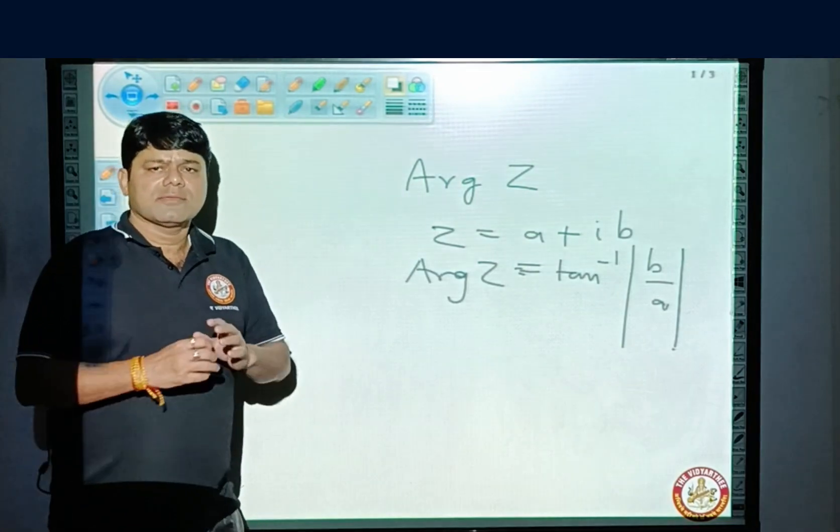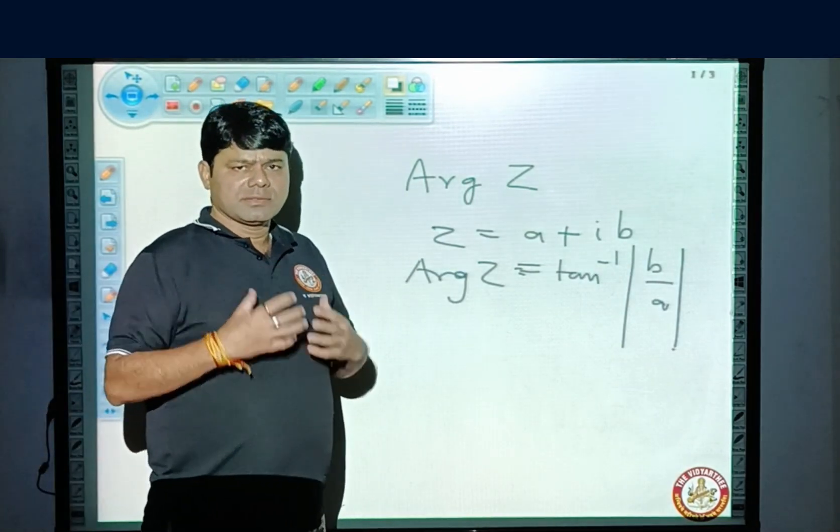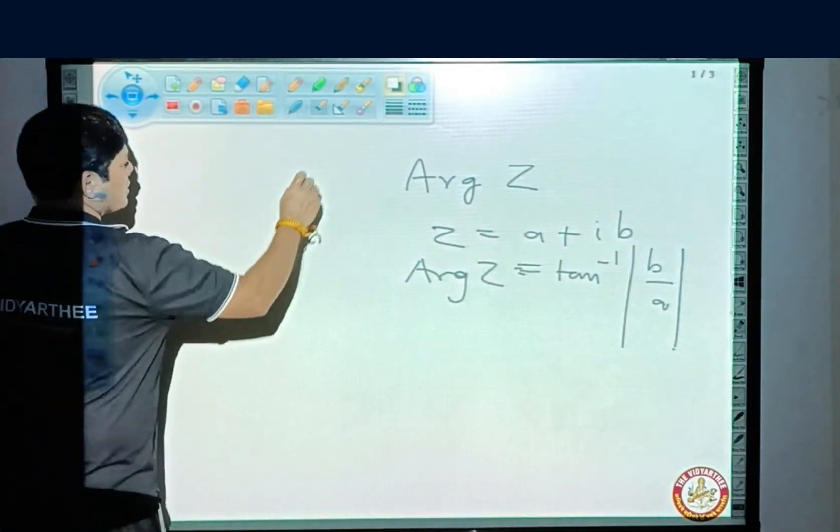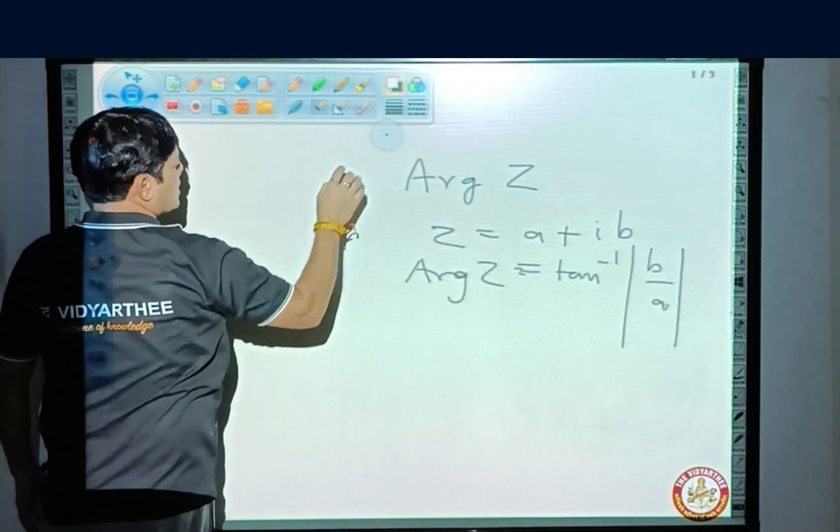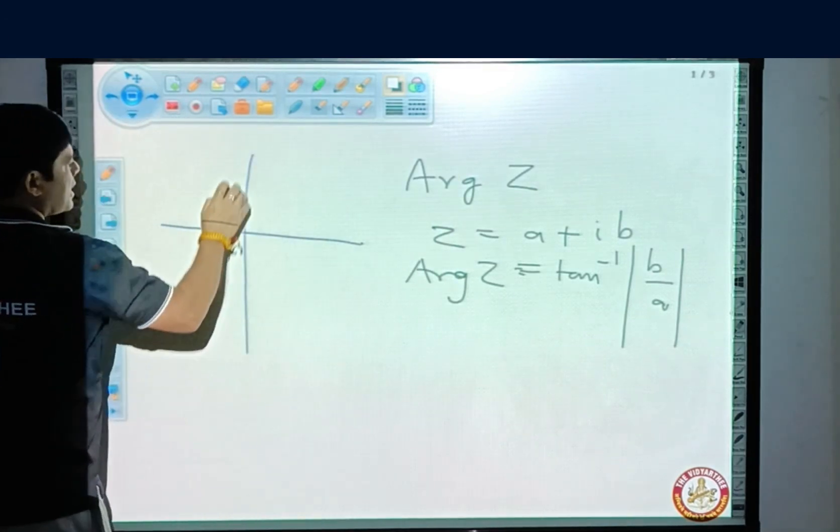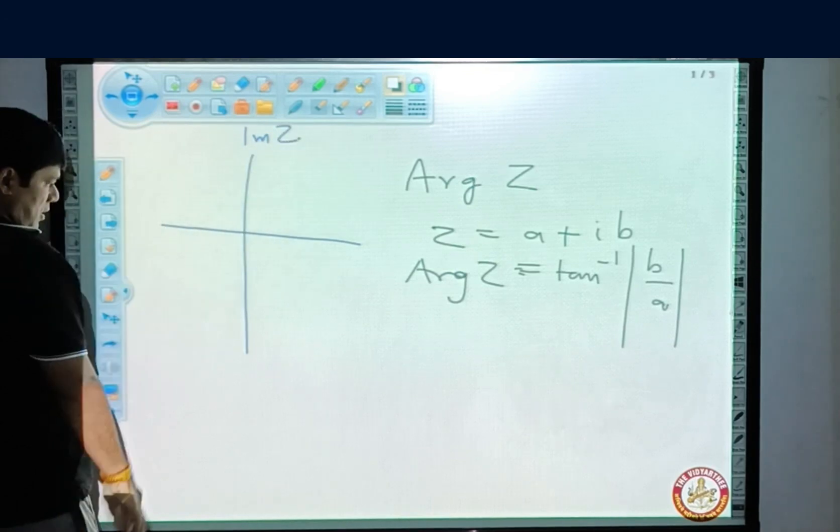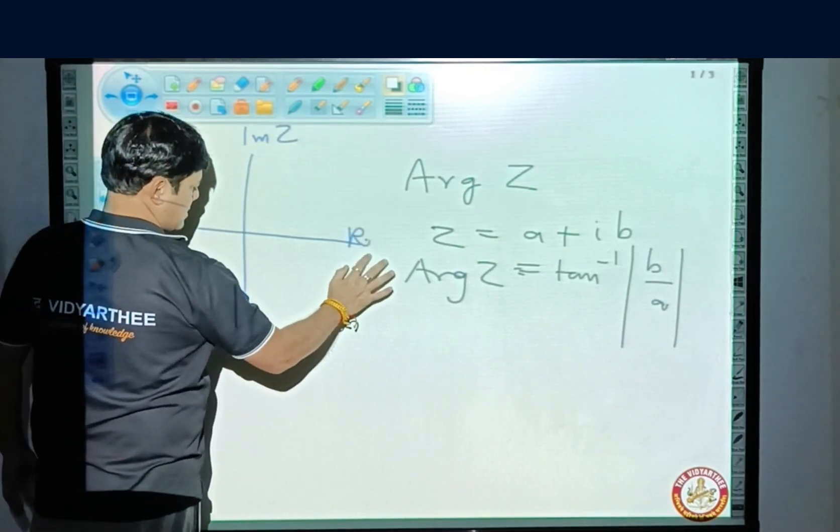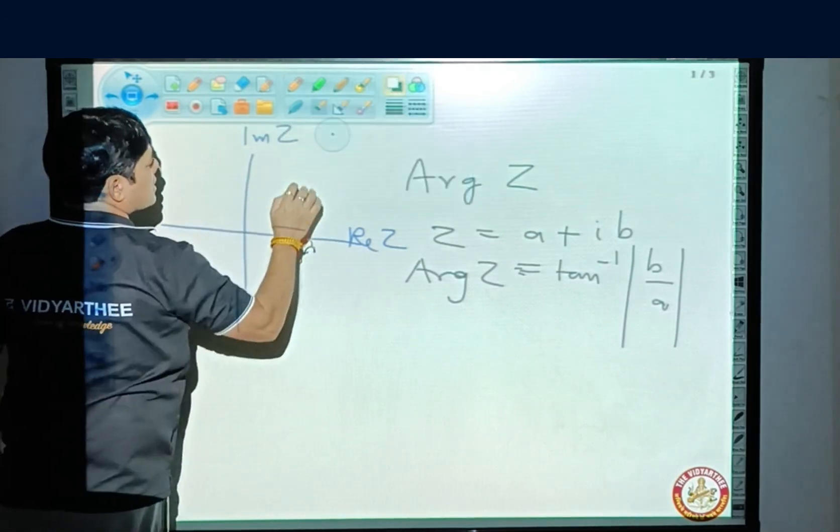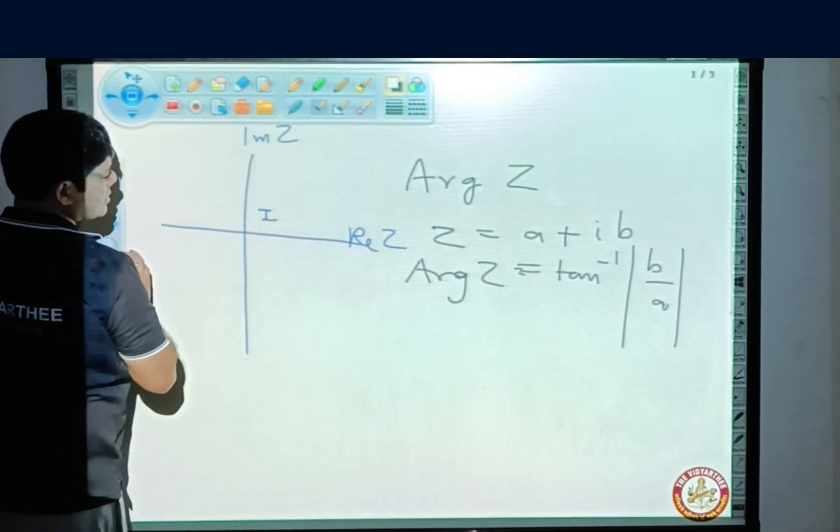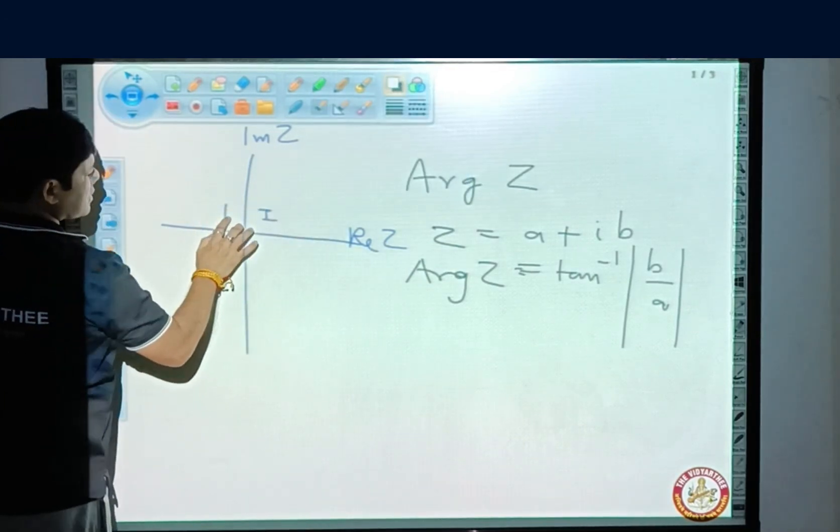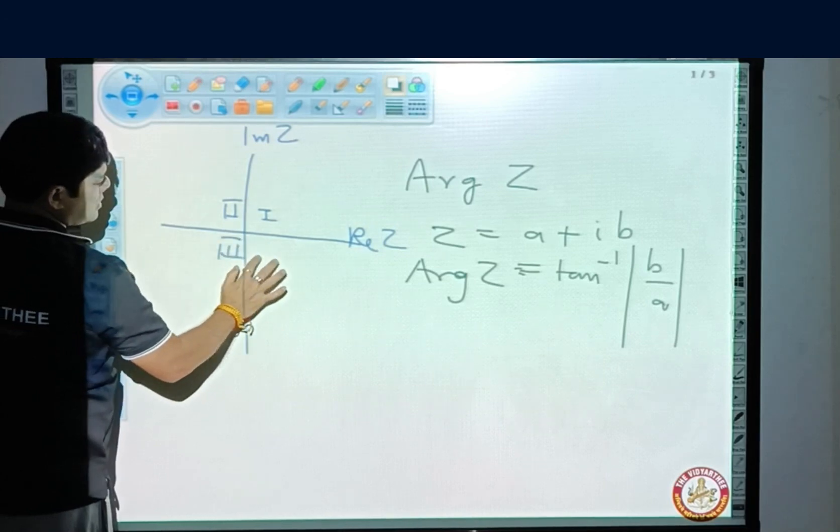Now, there are a few things to be noted. If the argument has to be found out, it depends upon the quadrants. If we have this as the imaginary axis of the complex number, this is the real axis. This is your first quadrant, this is your second quadrant, this is your third quadrant,